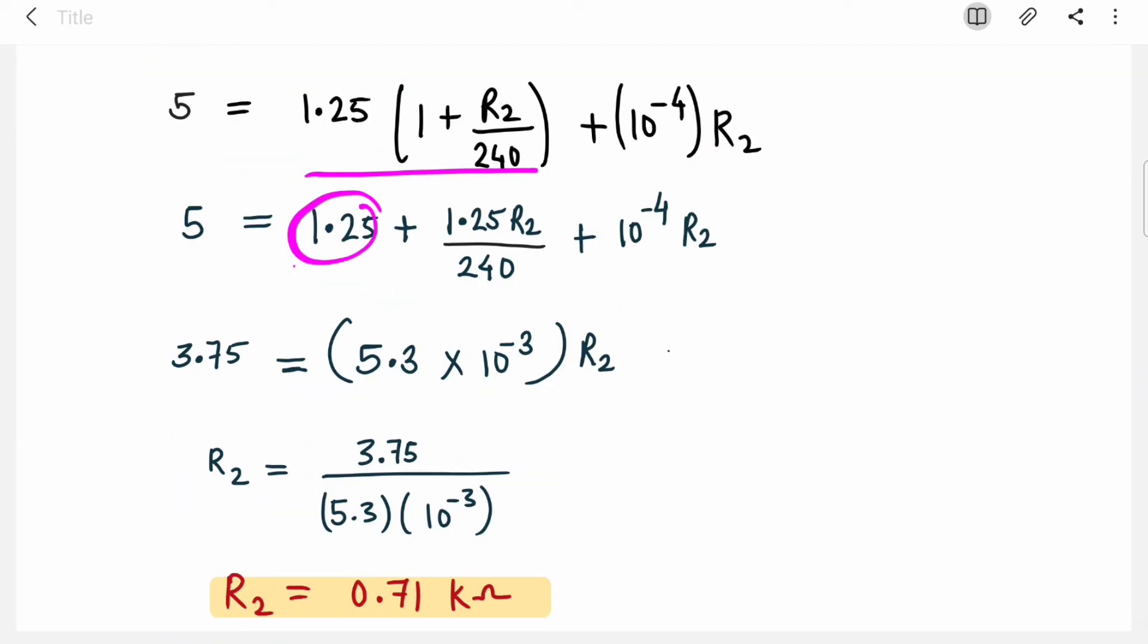I sent 1.25 to the left-hand side, so it became 3.75. With the remaining R2 terms, I simplified them and got 5.3×10^-3. I need R2, so I sent it to the left-hand side and got 0.71 kilohms. You have to put it in a calculator.